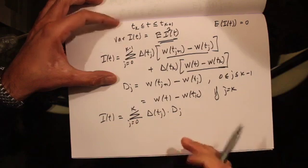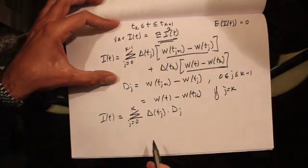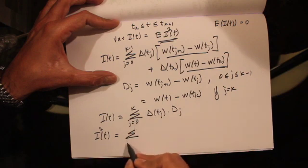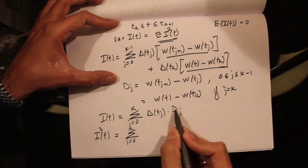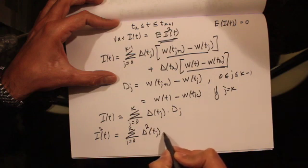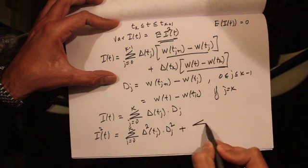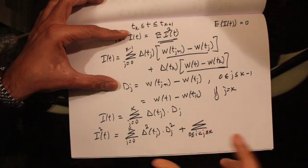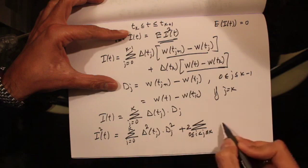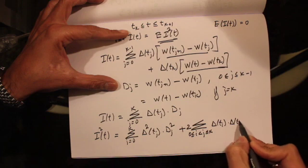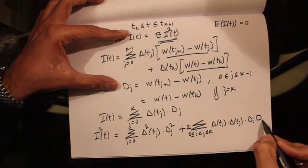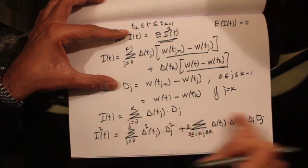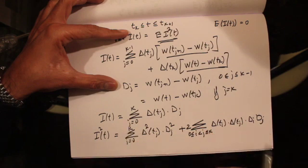To compute the variance we need to square this expression and take the expected value. Squaring the summation, Itô's integral squared gives us the sum of squares of the individual terms — that is, the summation of δ(t_j)² · d_j² — plus the cross terms, which are 2 · δ(t_i) · δ(t_j) · d_i · d_j for i ≠ j.